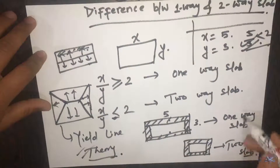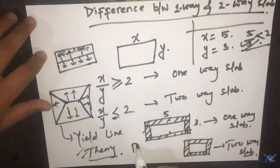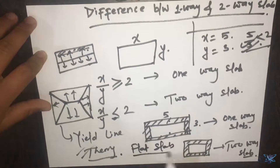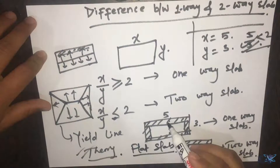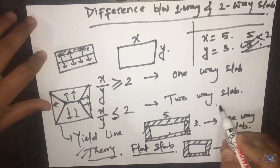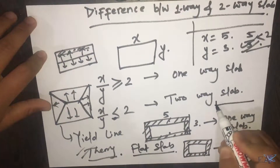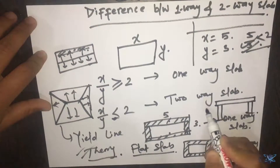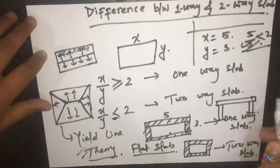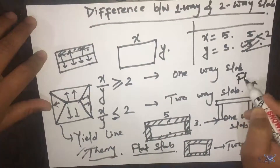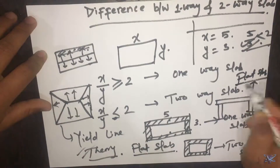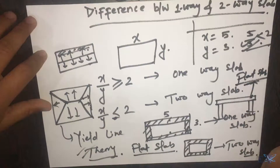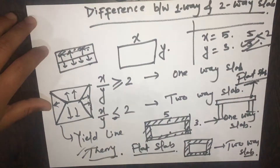There is another kind of slab called a flat slab. In a flat slab, there are no beams — the slab is directly supported on the columns. So we call it a flat slab. This is a bonus piece of information. Hope this video was helpful. Thank you for watching. Take care.